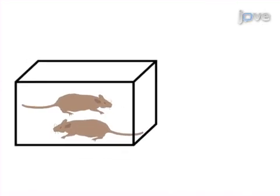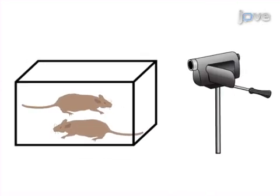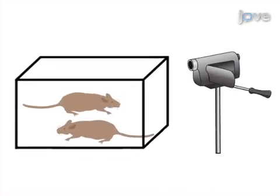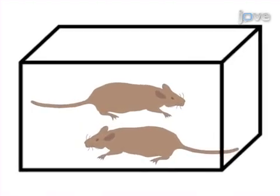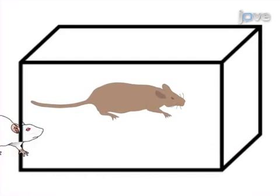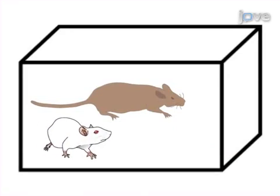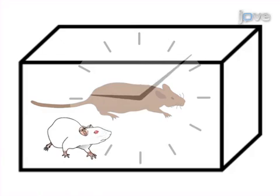On the day of testing, video recording equipment is set up to record social interaction. Next, the companion female is removed from the cage. When ready, an unfamiliar male rat is introduced into the cage of the resident male and they are allowed to interact for 10 minutes.